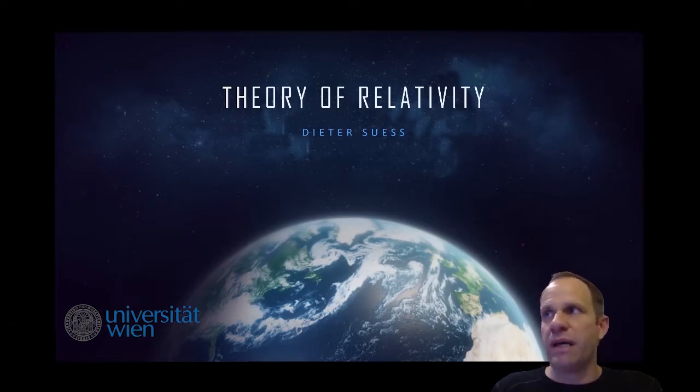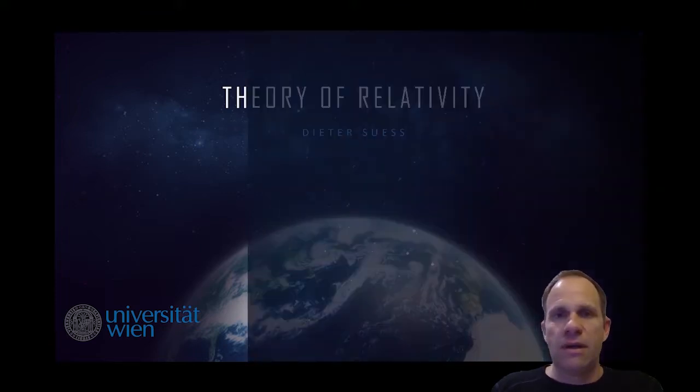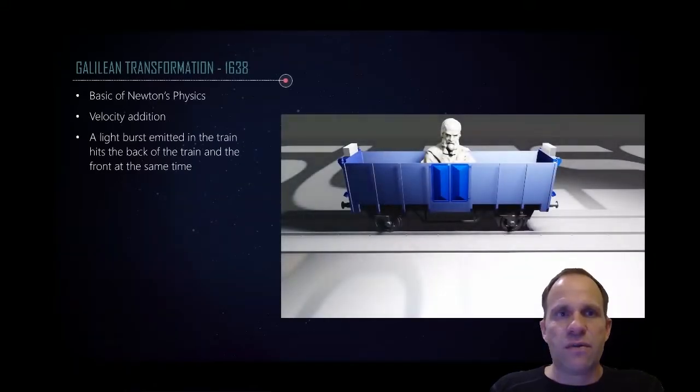Let's first go back in time to the year 1638, where the famous Galileo Galilei formulated his Galilean transformation. This will be the basis of Newton physics. By the way, Isaac Newton was just born four years after these transformations were formulated.